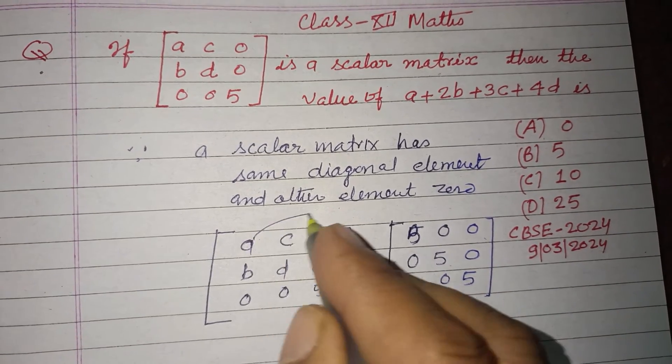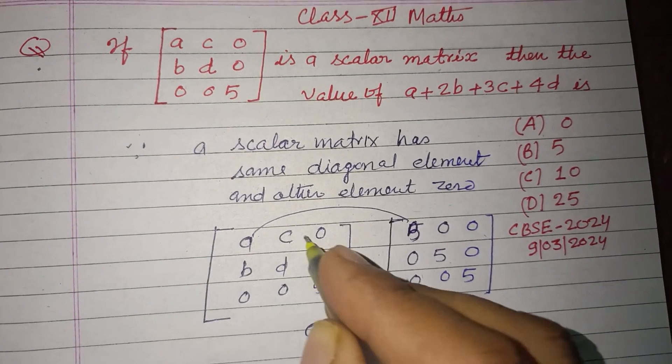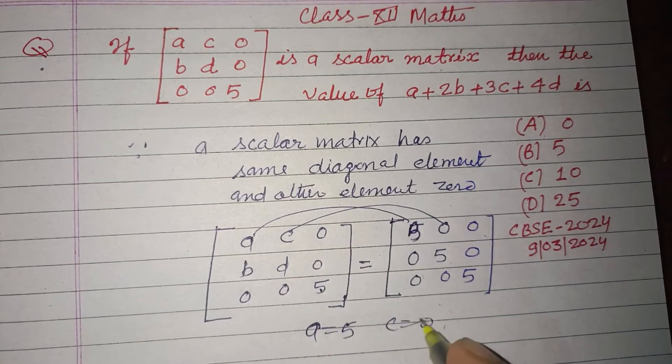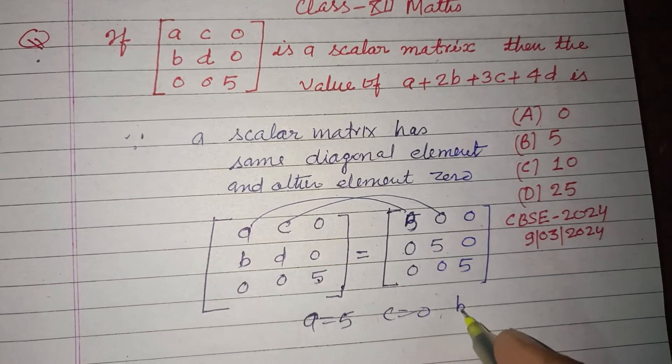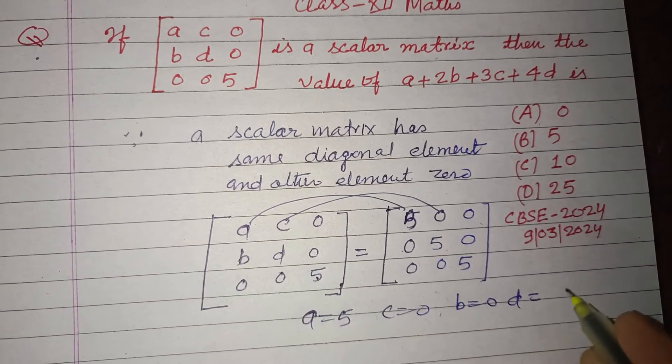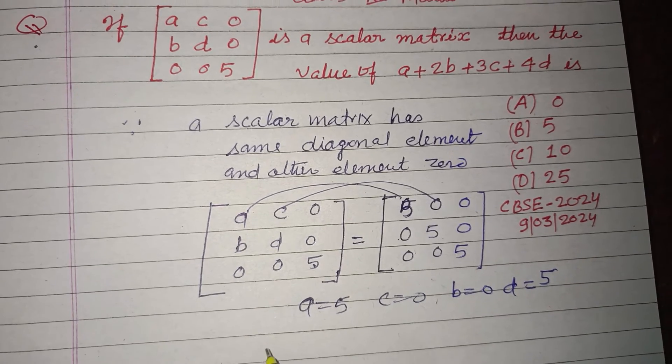From here, a equals 5, c equals 0, b equals 0, and d equals 5.